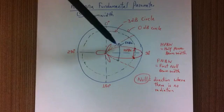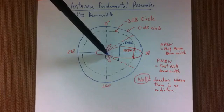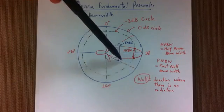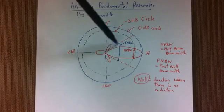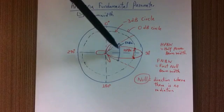Now for the first null beam width, you basically have to find where there is no radiation points. So there is no radiation along this direction and there is no radiation along this, so from this distance to that distance is your first null beam width.